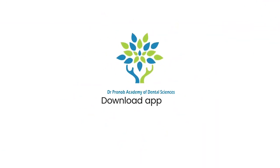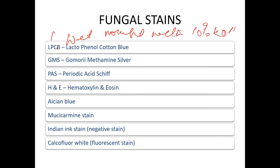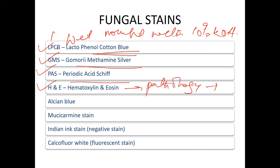Fungal stains include: wet mount with 10% potassium hydroxide, LPCB (Lacto Phenol Cotton Blue), GMS (Gomori Methenamine Silver), PAS (Periodic Acid Schiff), Hematoxylin and Eosin — the most favorite in pathology, giving pink and blue colors. Eosin gives pink color and hematoxylin gives blue color.